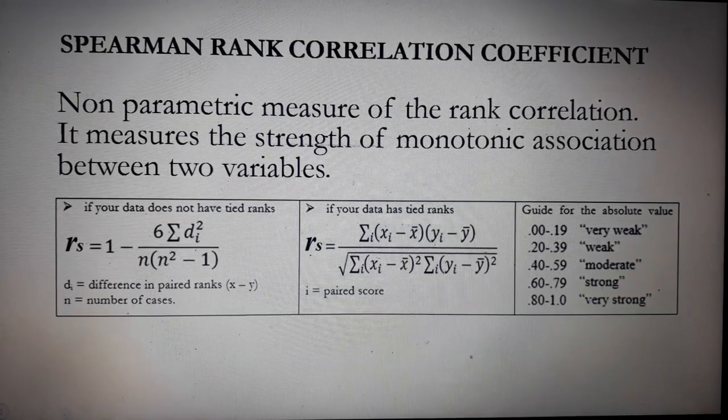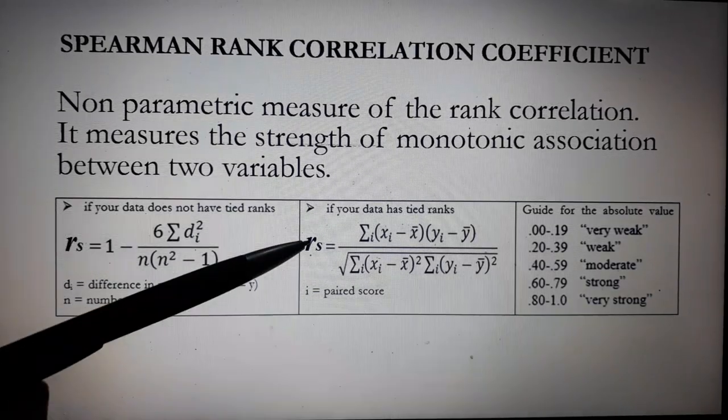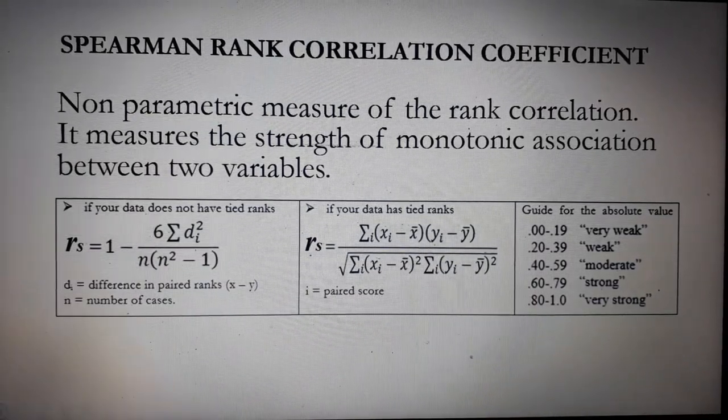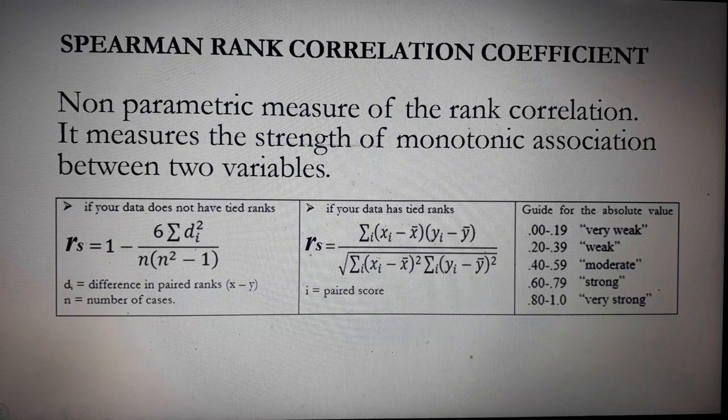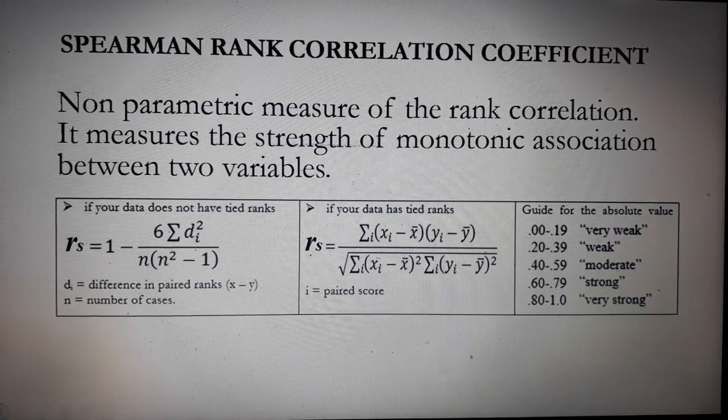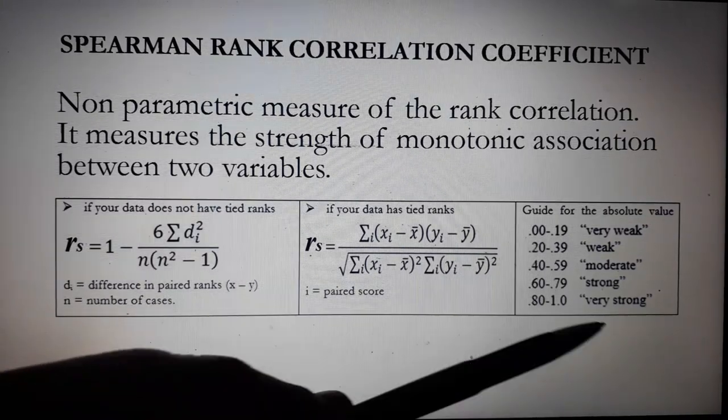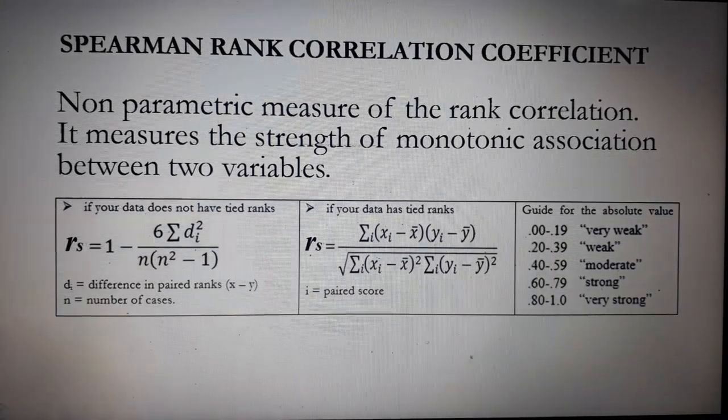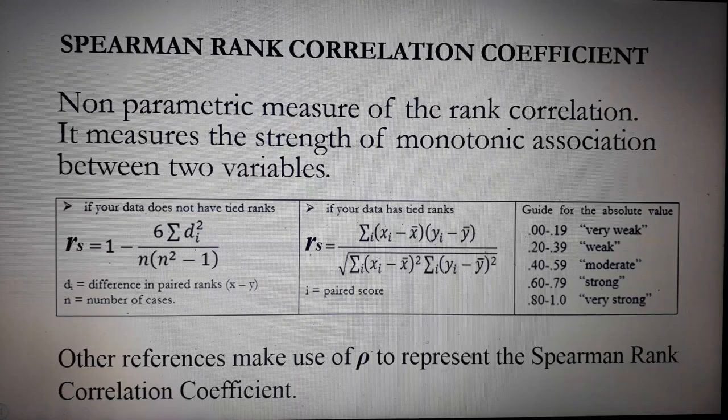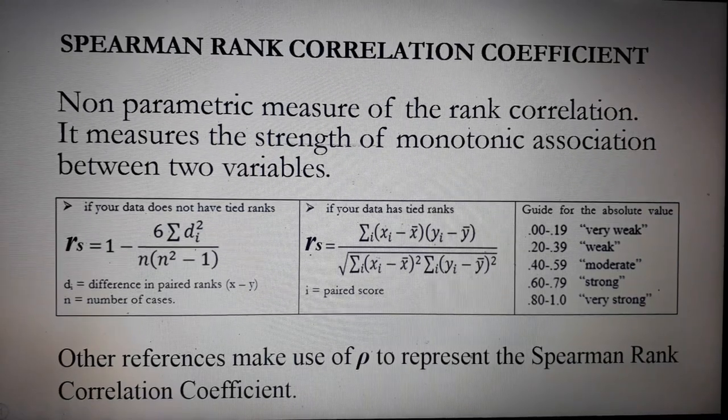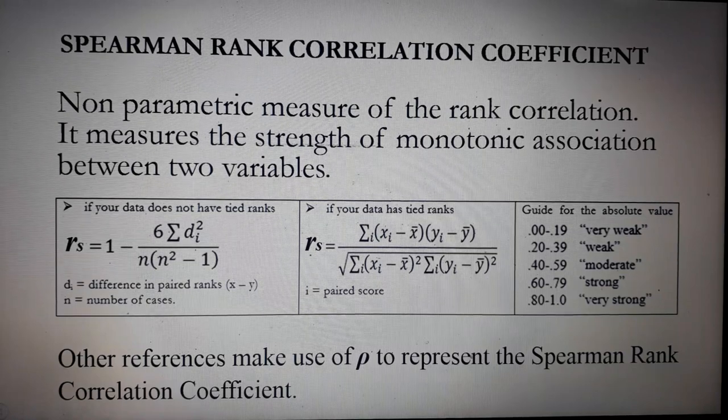Now if your data has tied ranks, you will use this equation. So the symbols are familiar because we made use of those quantities in the previous presentation. And this is the guide for the interpretation. Now other references make use of the rho to represent the Spearman Rank Correlation Coefficient.